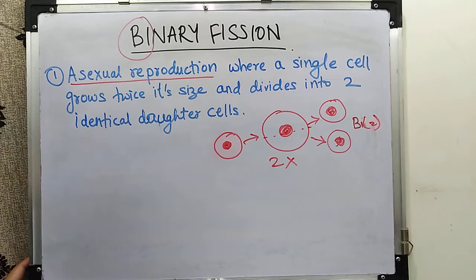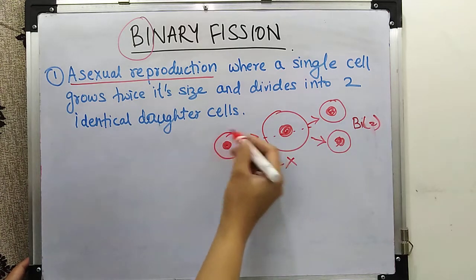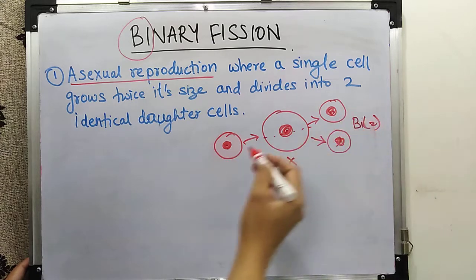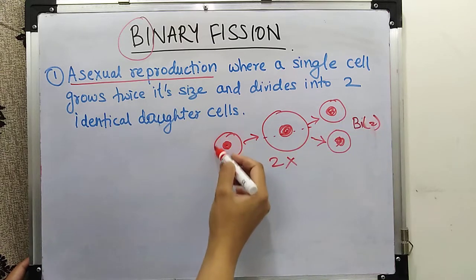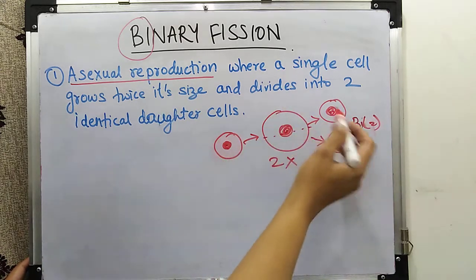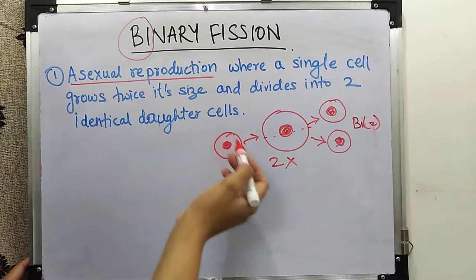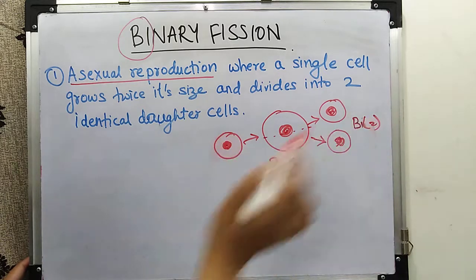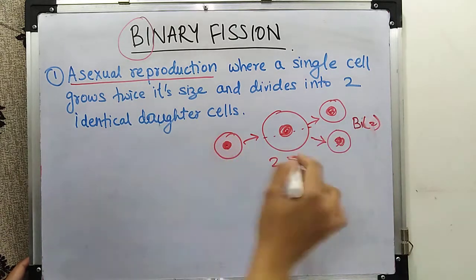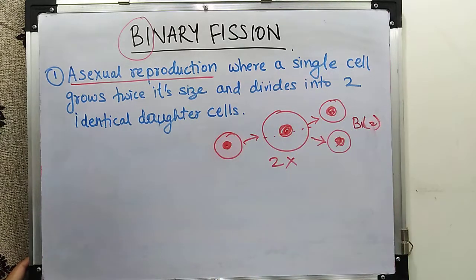Two parents produce a lot of variation together, but in binary fission there is no chance of any variation because this cell is getting divided into two similar cells like the original cell — it just divides and splits into two.